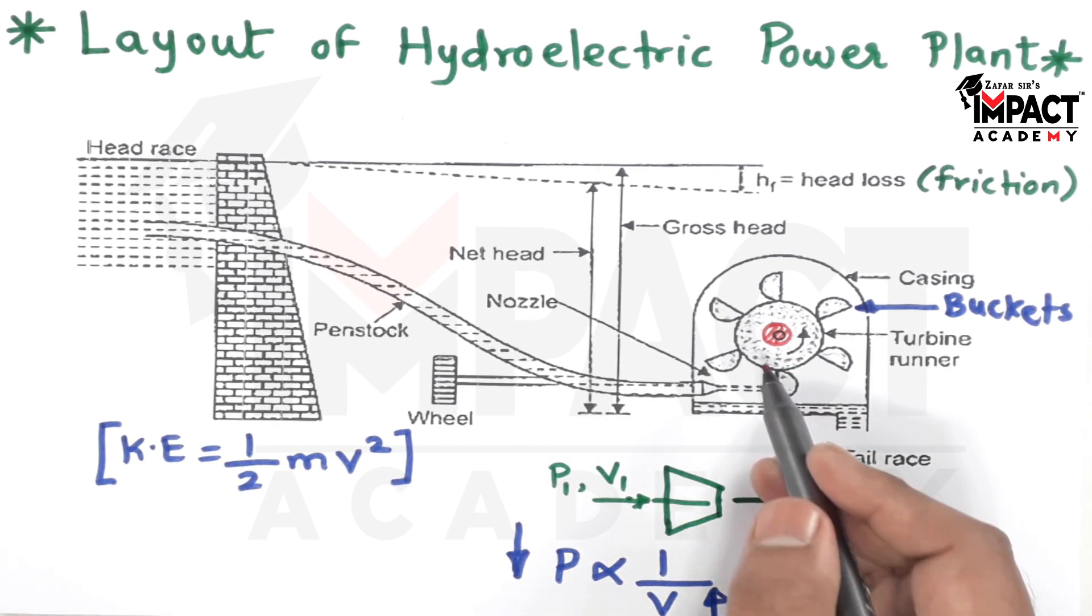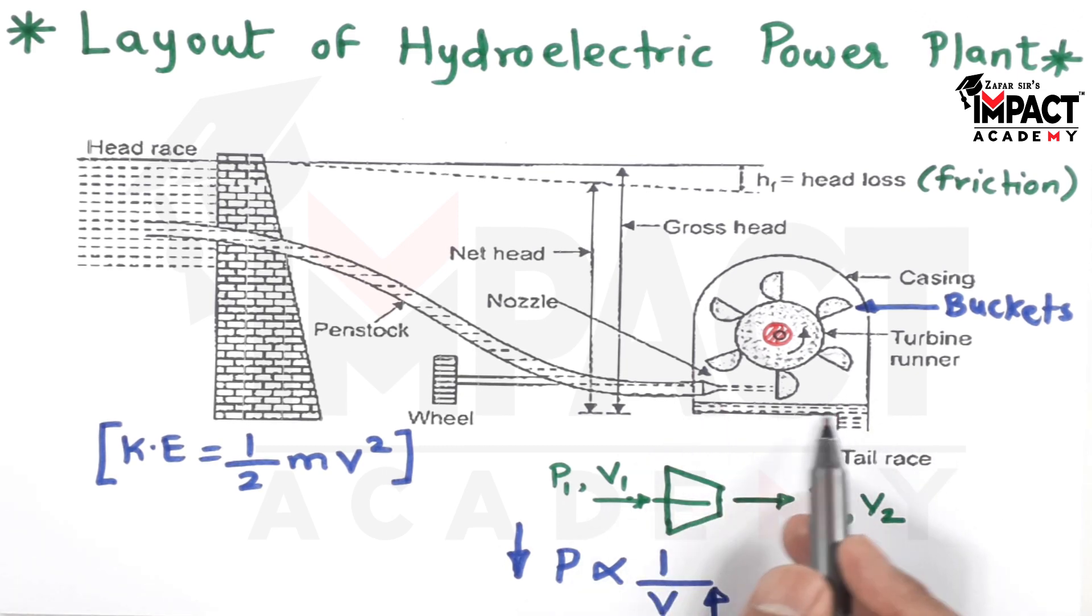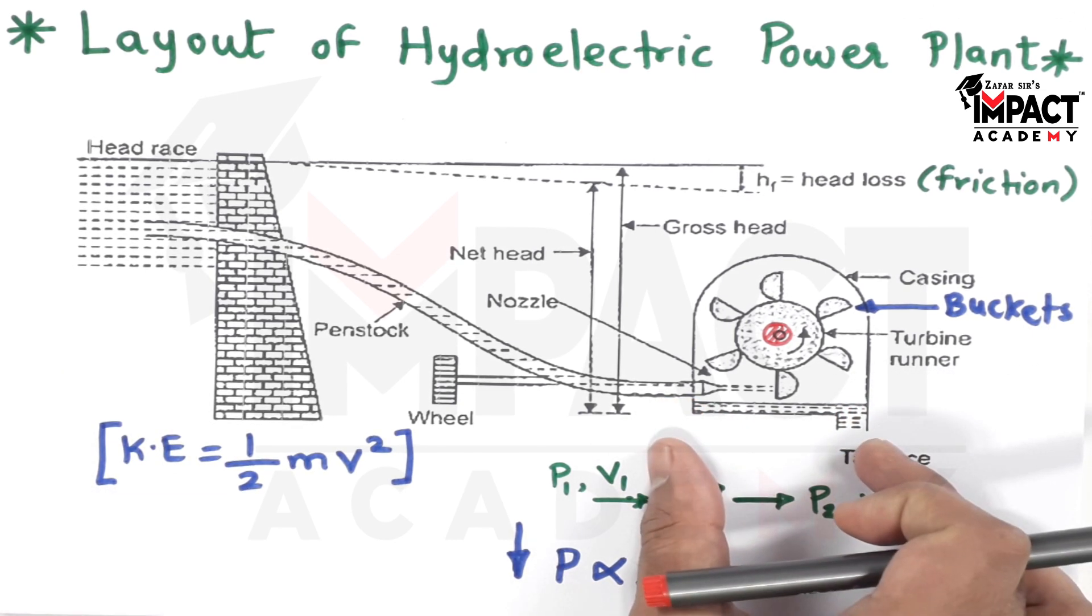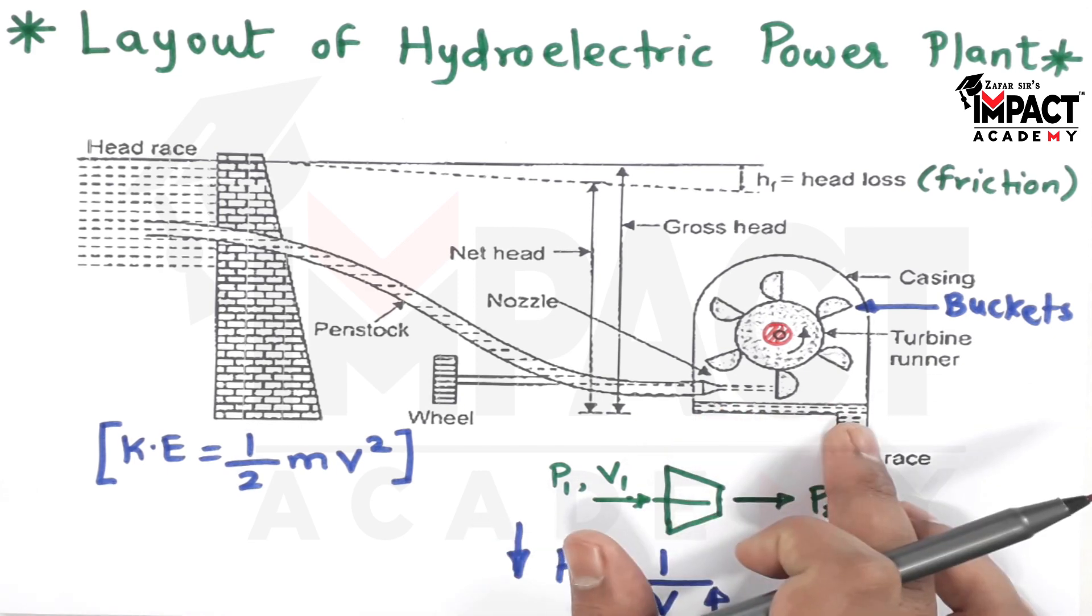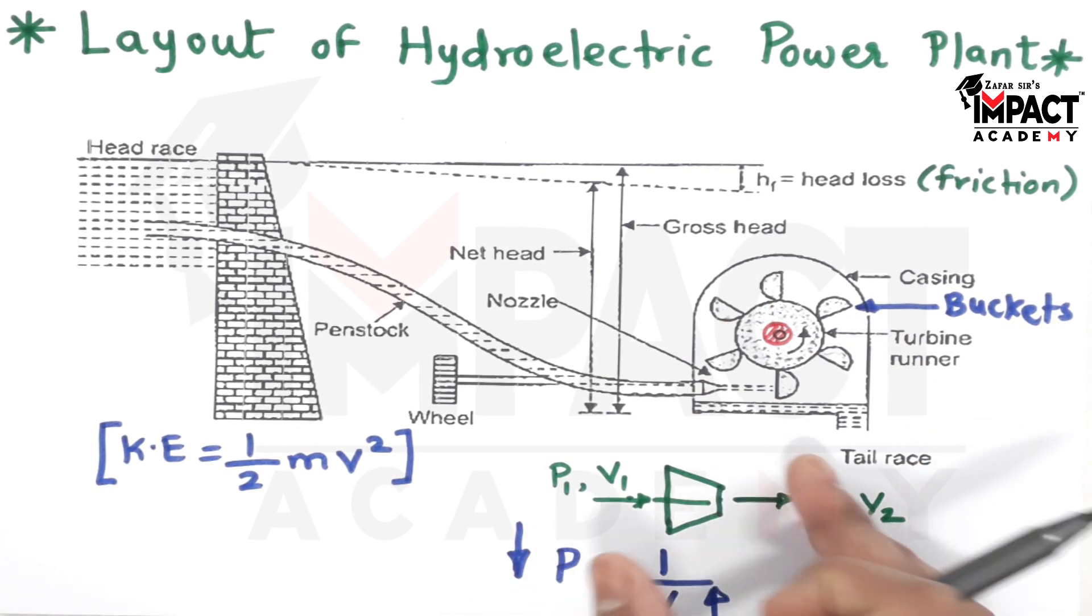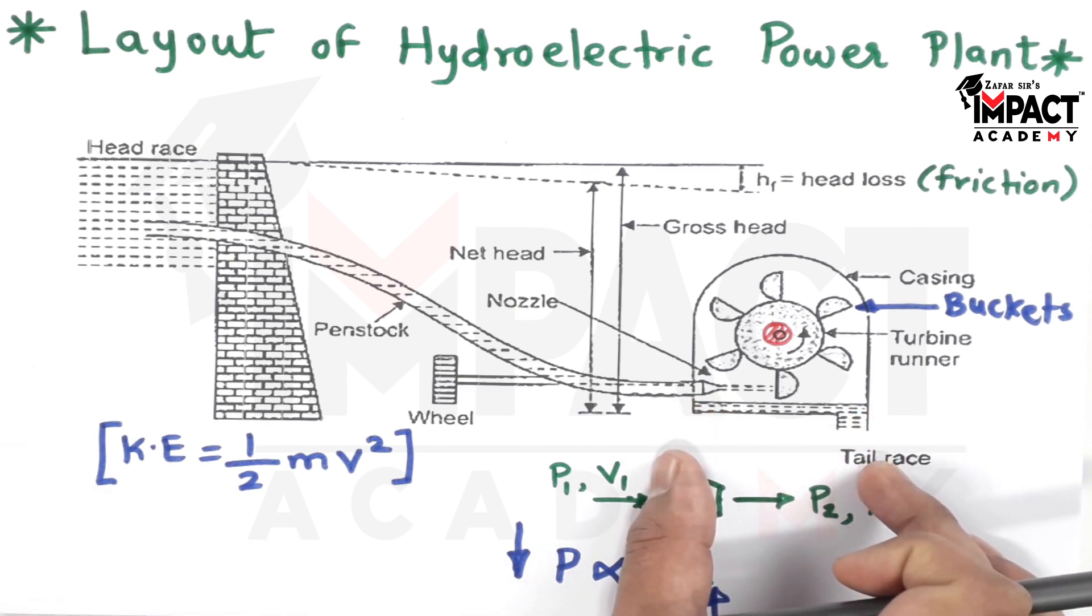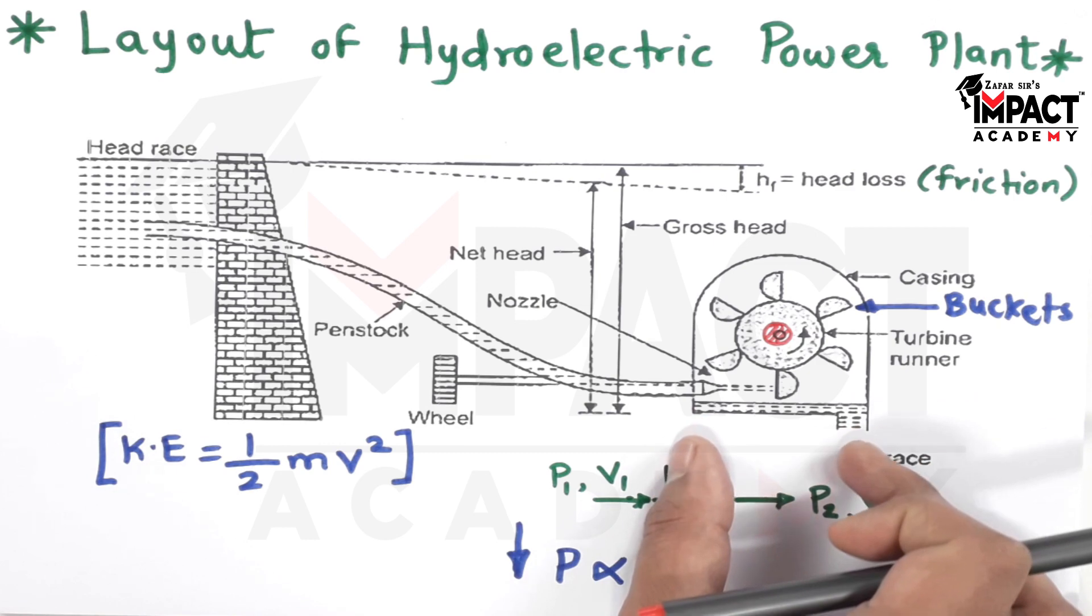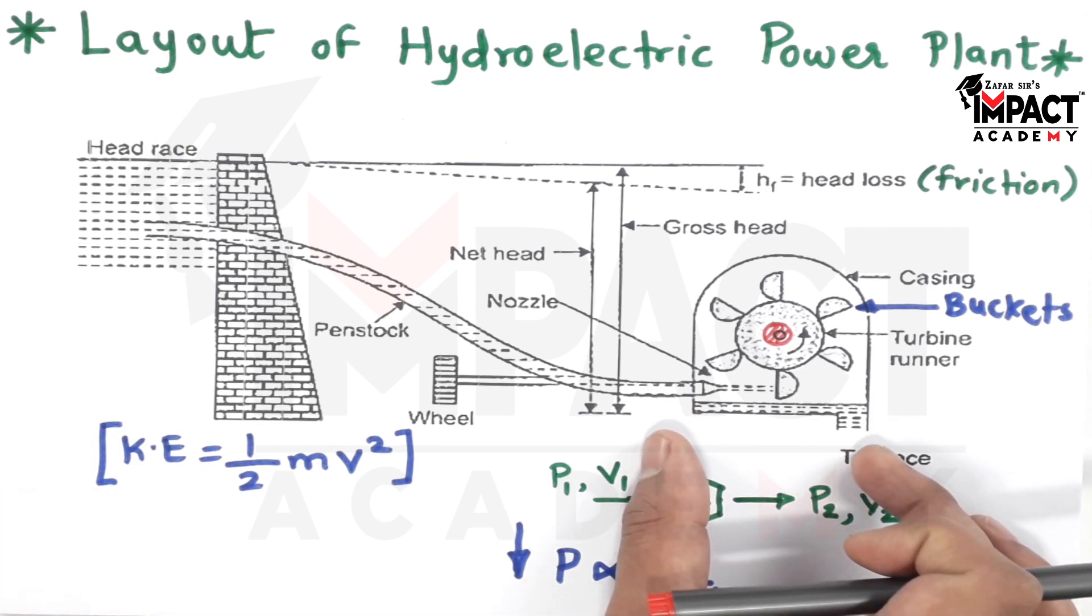And after the work has been produced, the water falls inside this part which is called as the tail race. Tail race we are having of increasing cross section because at the outlet we would be getting huge amount of velocity of the fluid, so we have to increase the cross section so that the velocity decreases and the pressure energy increases. That is why we have a tail race where the water gets collected after the work has been produced.